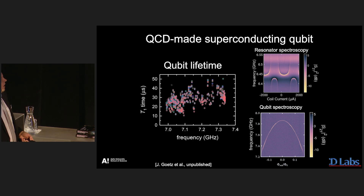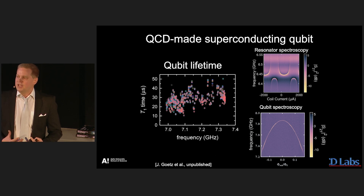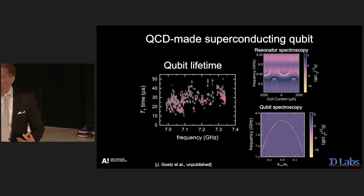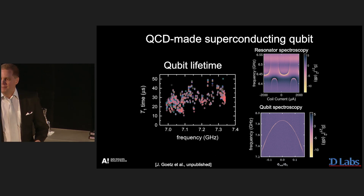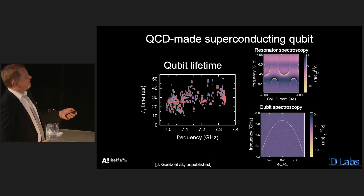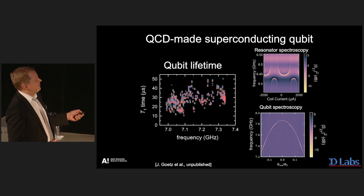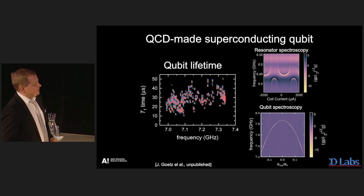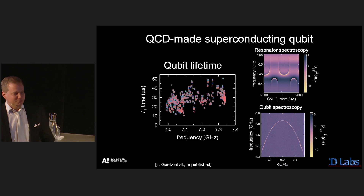We can also measure the lifetime, which is the time it takes for the quantum information to be destroyed by itself — something you would not want to happen, but it happens eventually. In this experiment, for example, the lifetime was between 10 and 50 microseconds, which is a good number in the field.